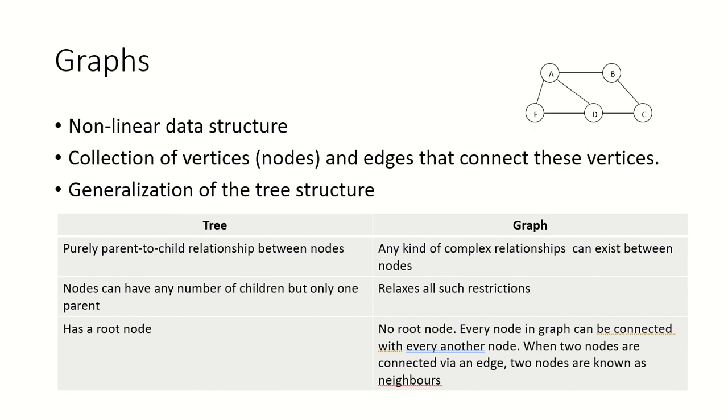Another non-linear data structure is graphs. As with trees, they are a collection of nodes and edges that connect these vertices. If we look at an example of this graph, A, B, C, D, E are all nodes connected to each other by vertices.